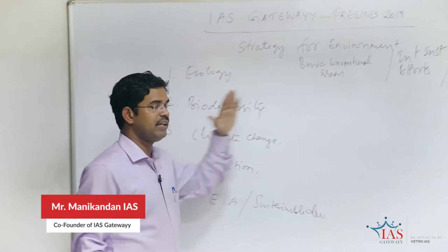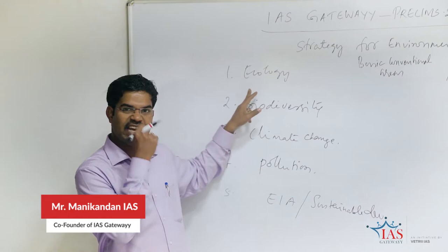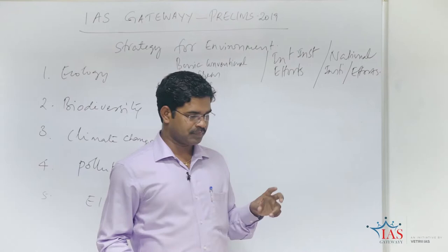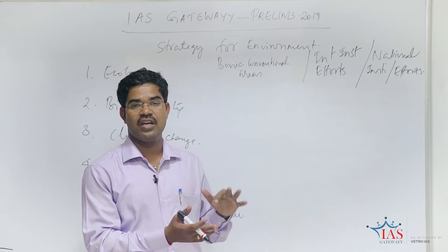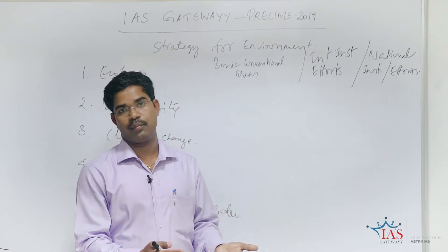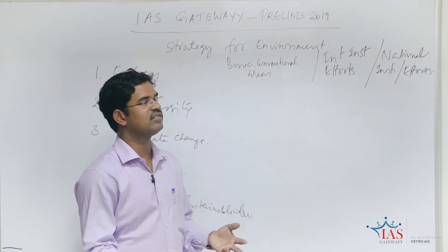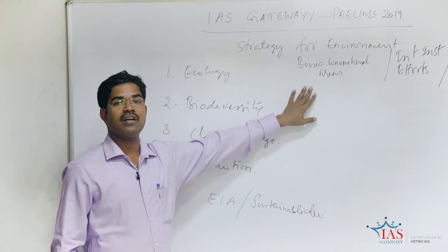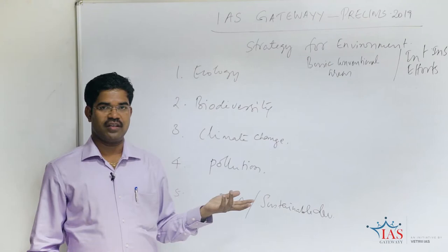Let us take ecology. If you see ecology — what is ecology, what is ecosystem, how the ecosystem functions and its dynamics, food chain, food web, how various producers, energy pyramids, ecological pyramids, all those things — all those basic things which we studied in school. These come in the basic conventional part of ecology. And if you see the types of ecosystem: biome — although there are many, many things in these areas, they are part of the basic conventional areas.